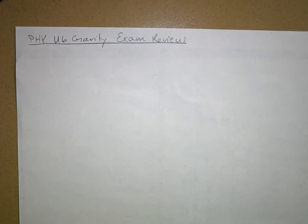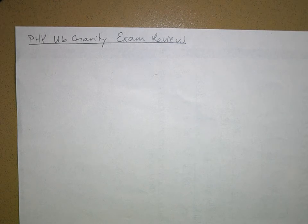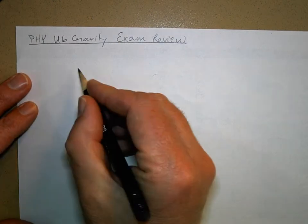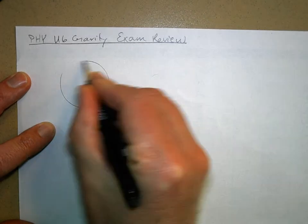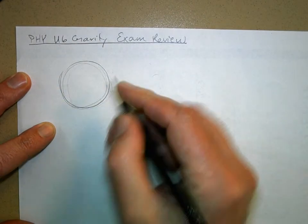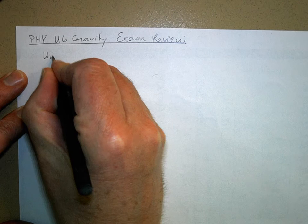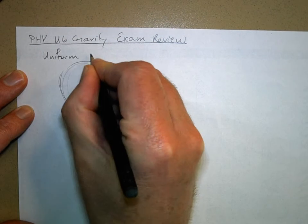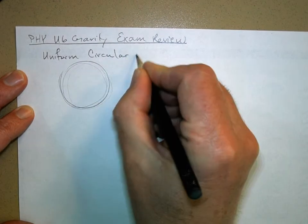Let's review some of the concepts that are going to be on the exam. There are two major ideas: centripetal acceleration and force, and gravitation. If you have an object that's moving in a circle with constant speed, that's called uniform circular motion.